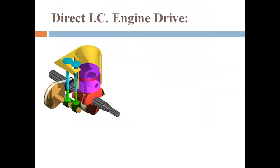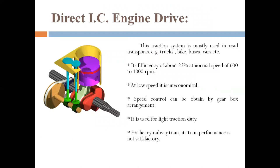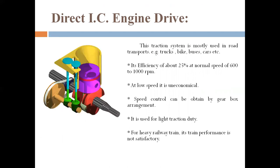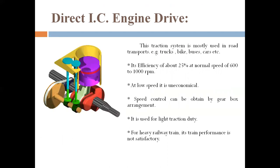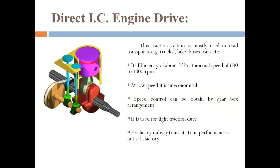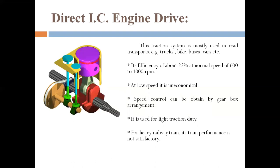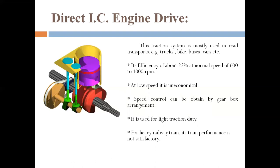Now the Direct IC Engine Drive. In the figure you can see an IC engine — it is a two-stroke engine. IC engine means Internal Combustion Engine. This traction system is mostly used in road transportation — it is the same system used in our Activa, bikes, scooters, rickshaws, buses, cars, and trucks. This system has an efficiency of 25% at a normal speed of 600 to 1000 RPM.